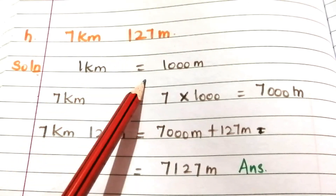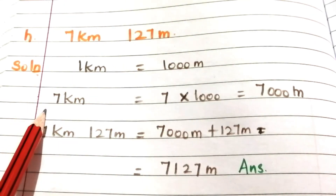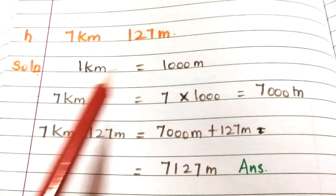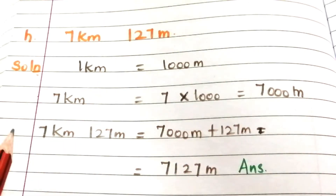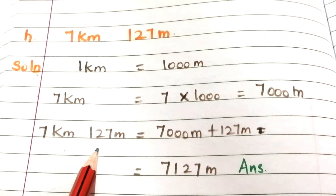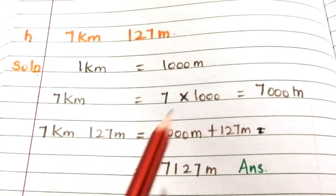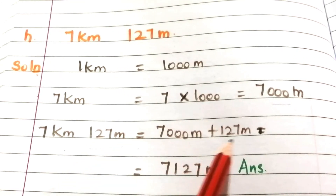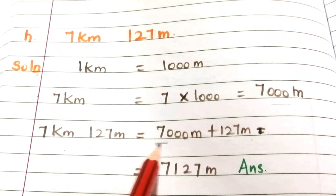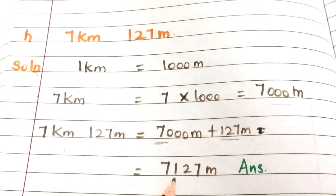Problem H (last problem): 7 kilometers 127 meters. We know 1 kilometer equals 1000 meters, therefore 7 kilometers equals 7000 meters. So 7 kilometers 127 meters equals 7000 + 127 = 7127 meters. This is our answer.